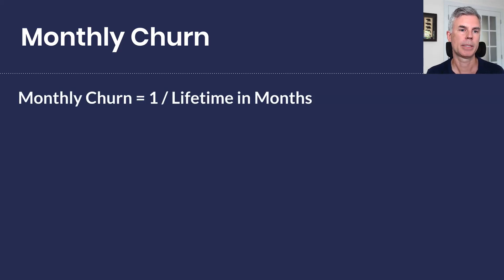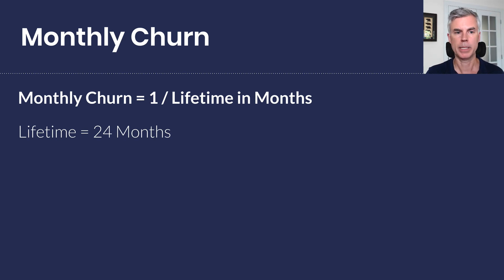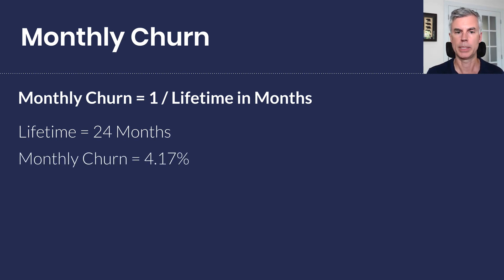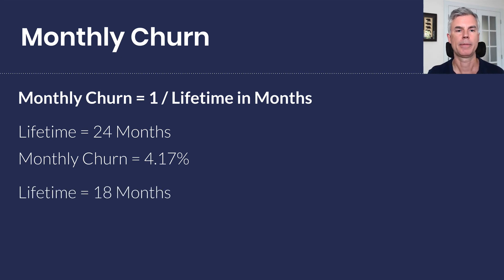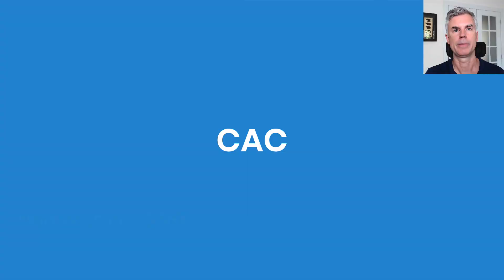You can also calculate monthly churn from your lifetime in months by dividing one by the lifetime in months. If the lifetime is 24 months, one divided by 24 is 4.17% monthly churn. If the lifetime is 18 months, your monthly churn is one divided by 18, which is 5.56%. So you can learn a lot from the lifetime.